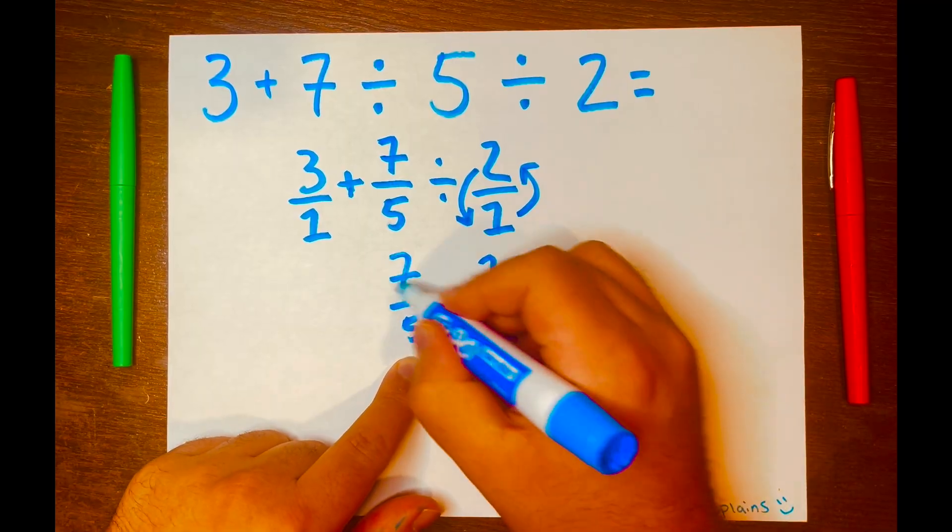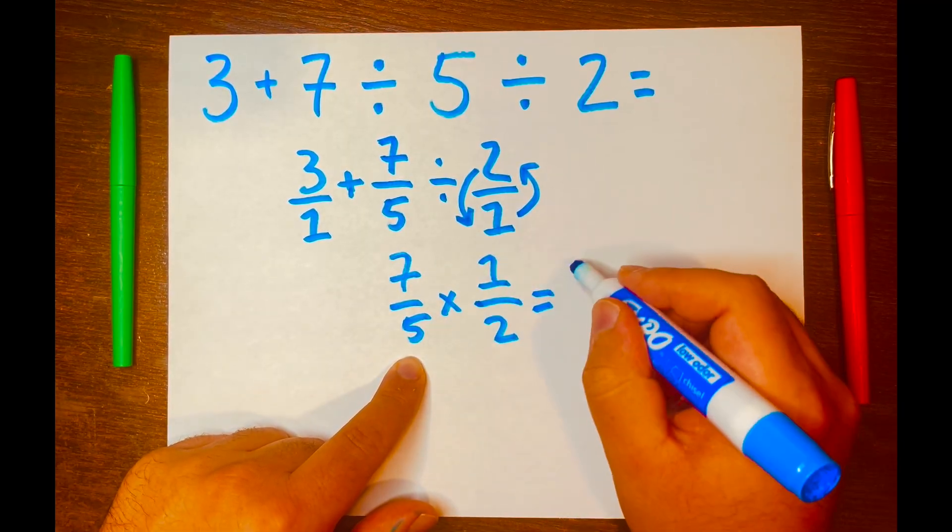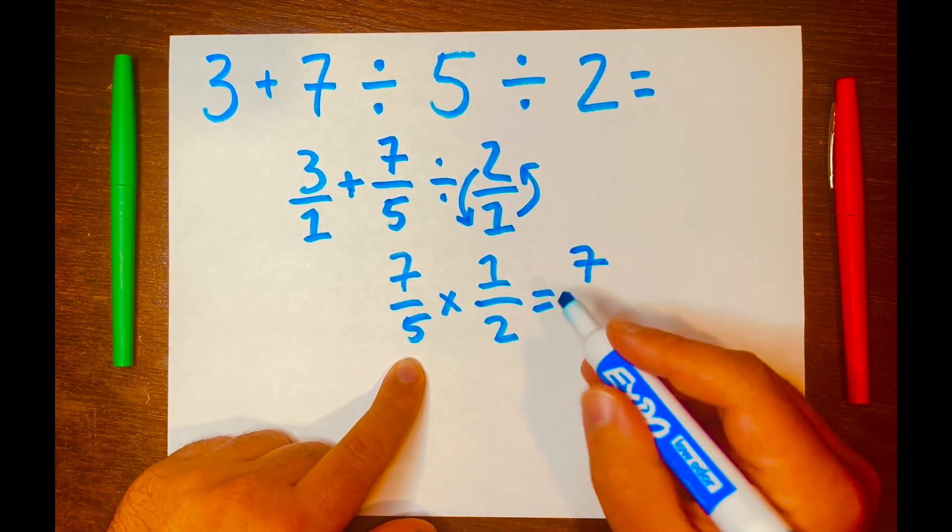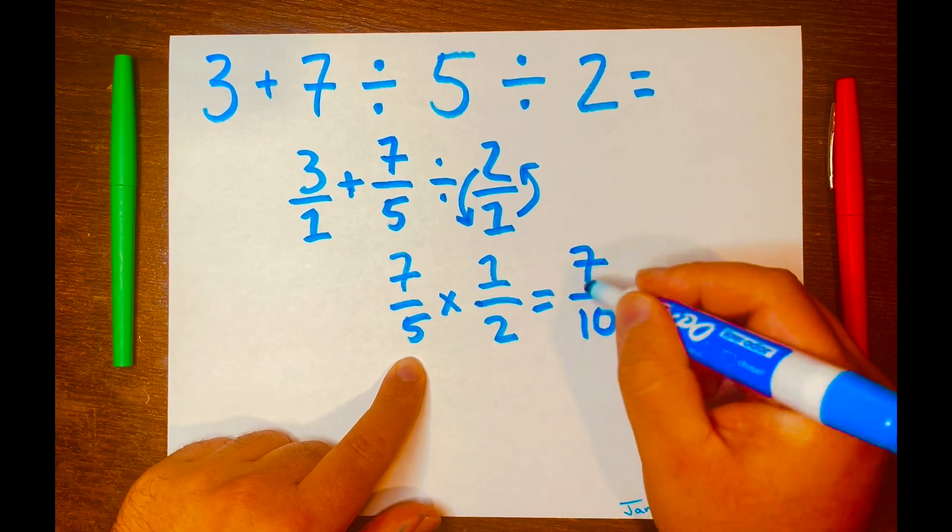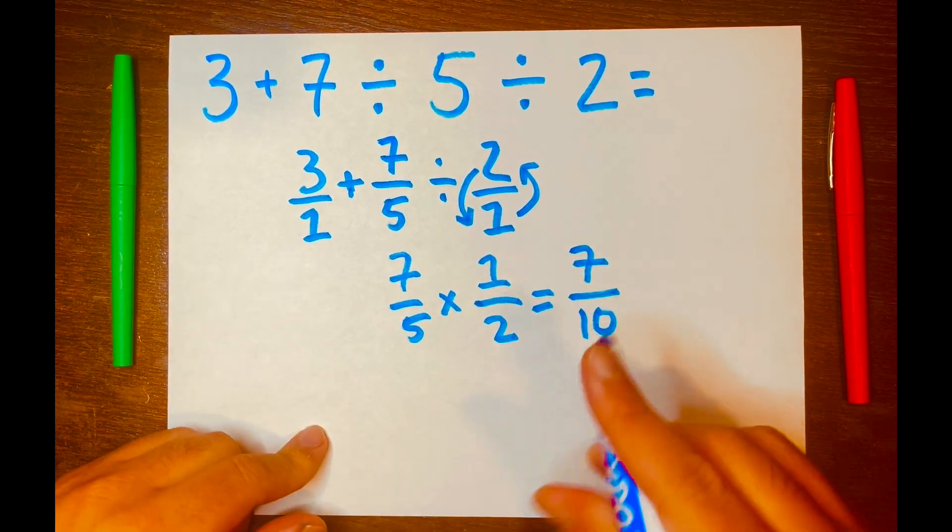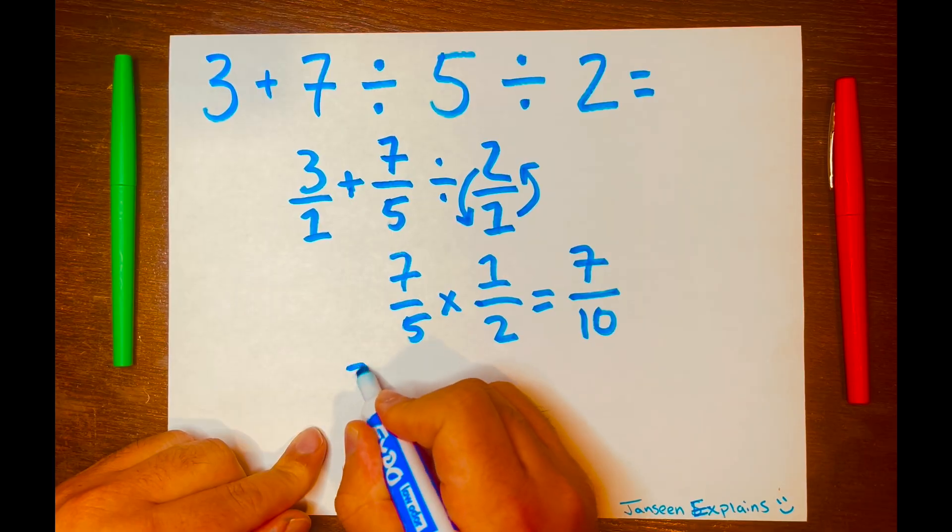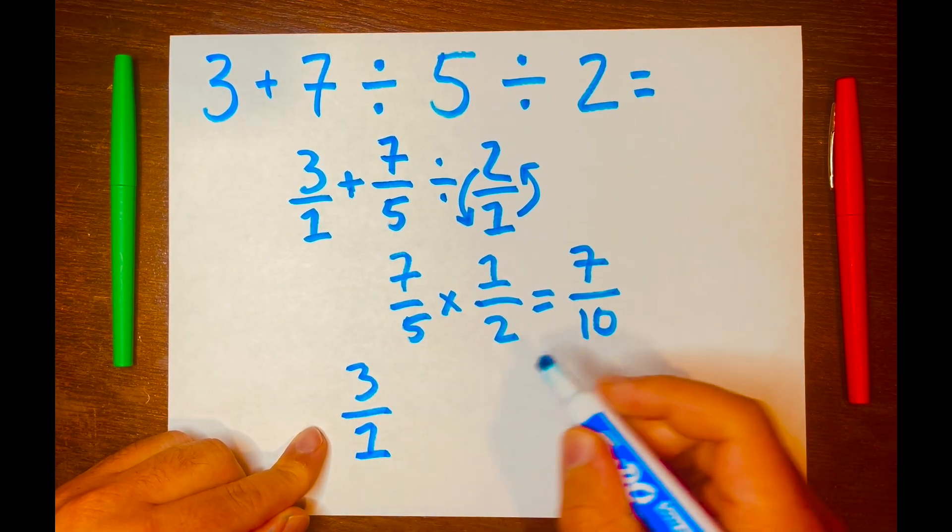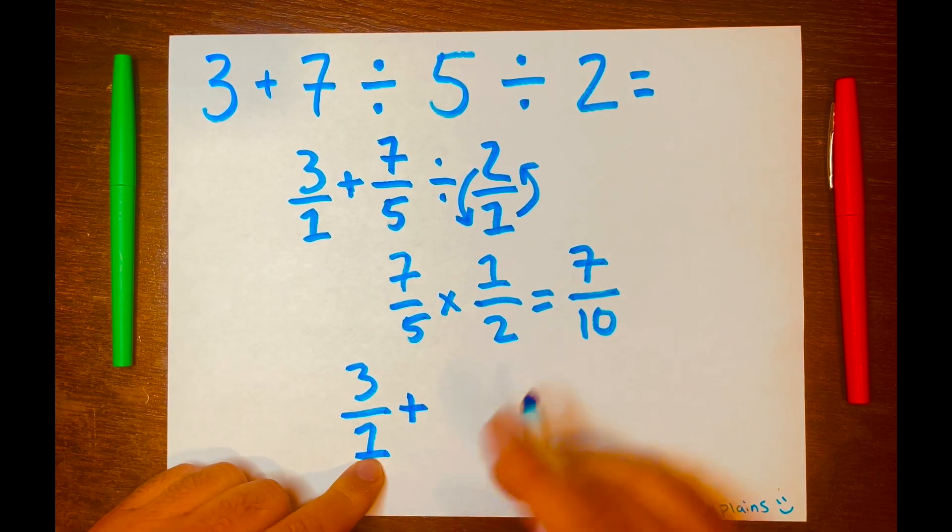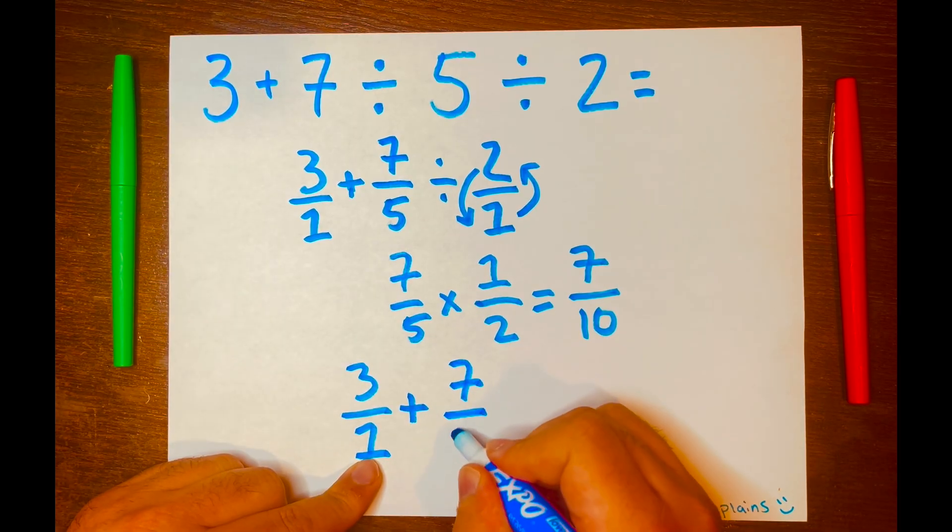And next you multiply across, 7 times 1 is 7, 5 times 2 is 10, and now we have 7 over 10. Now we'll bring down the 3 over 1 down, the addition symbol down, and then write 7 over 10.